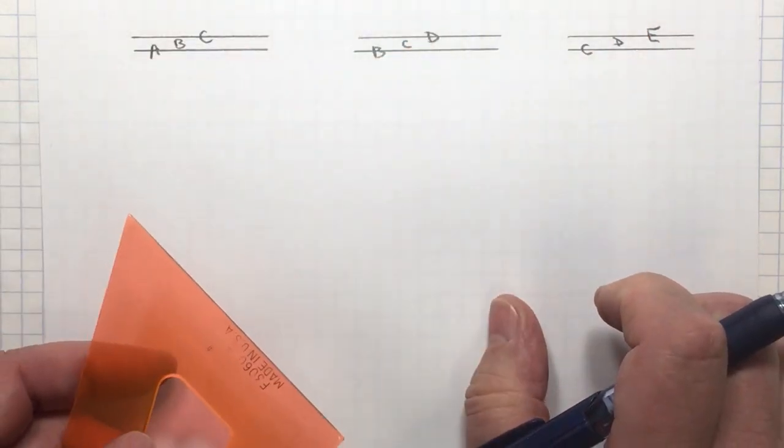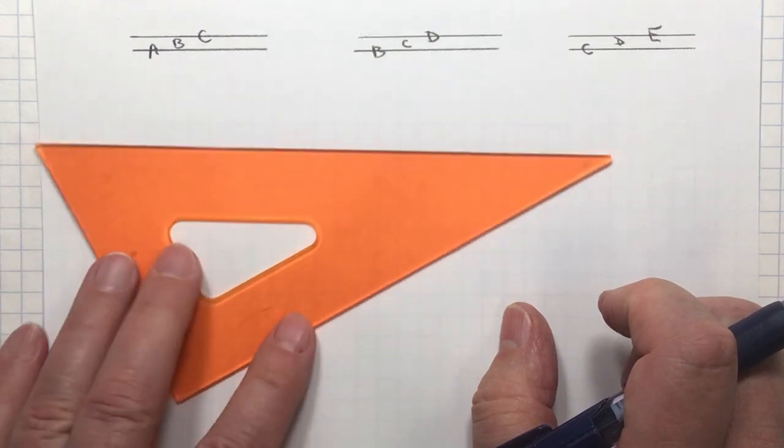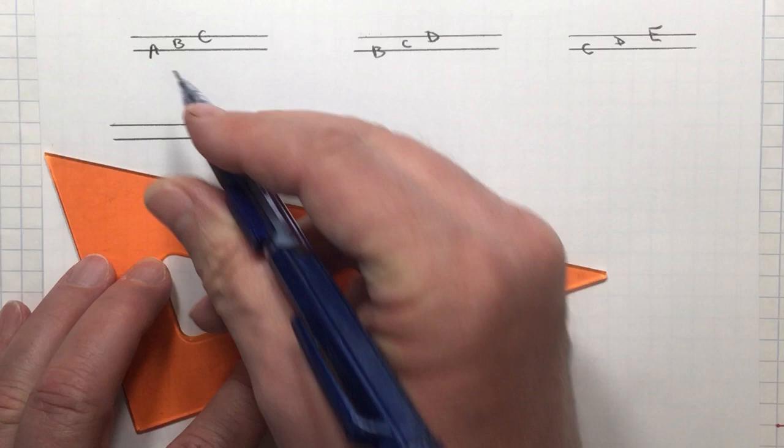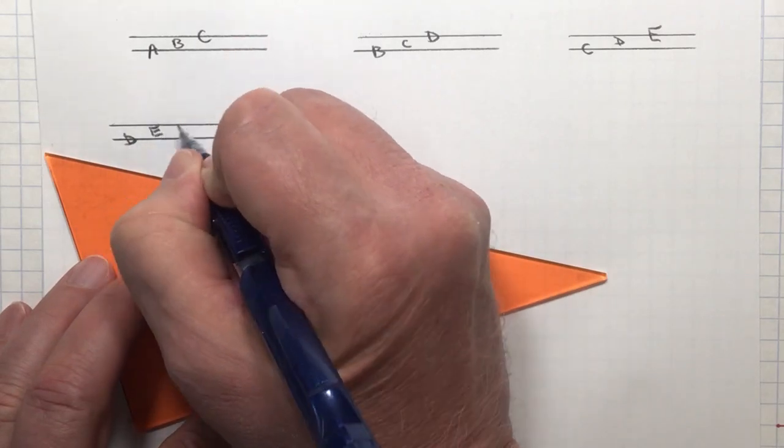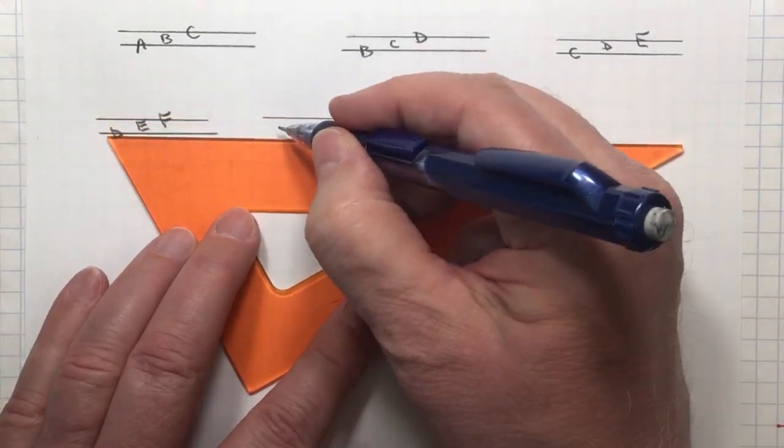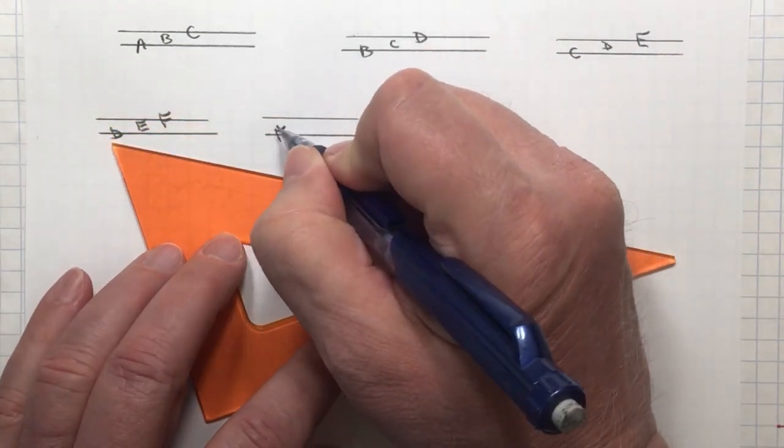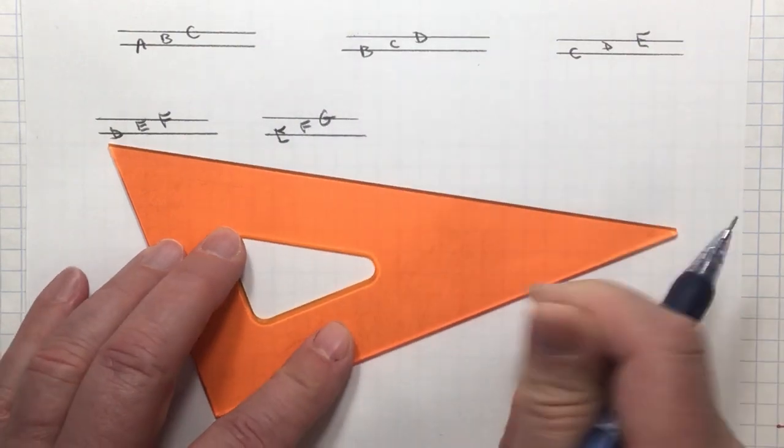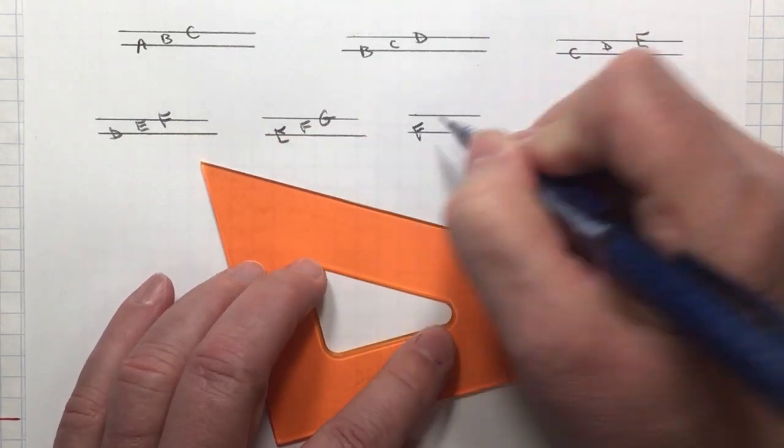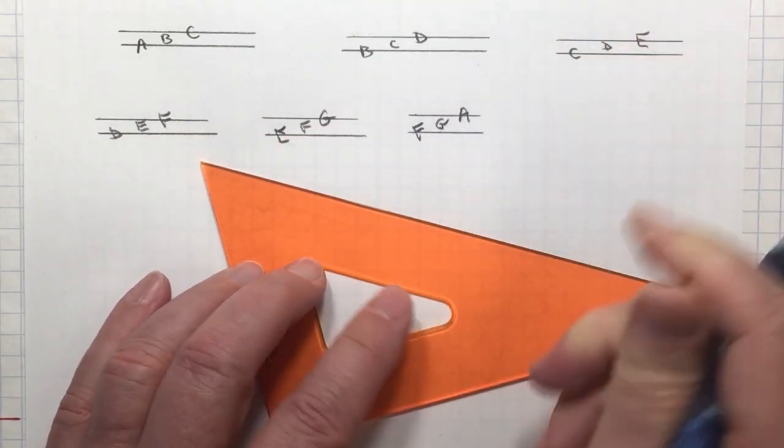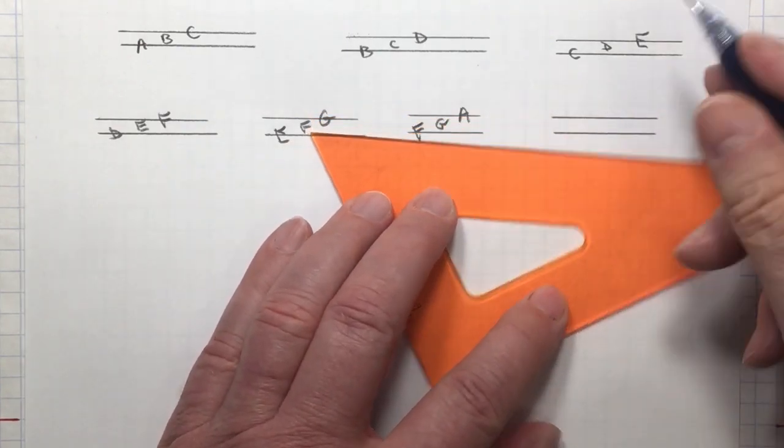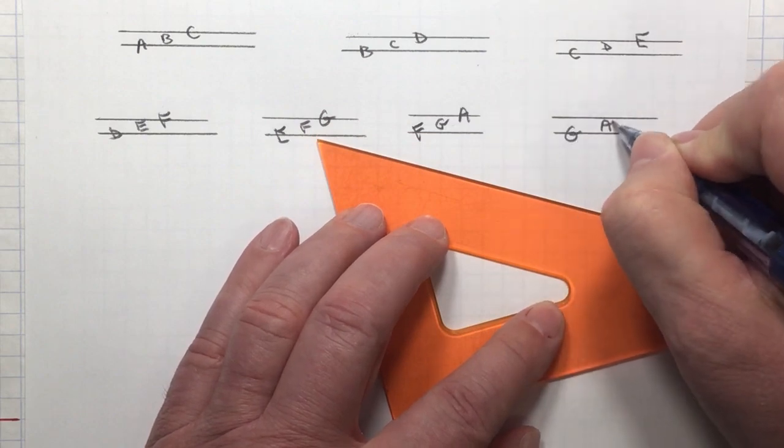I can give the first line any of the seven letter names. D implies E F. E implies F G. F implies G A. And finally, G implies A and B.